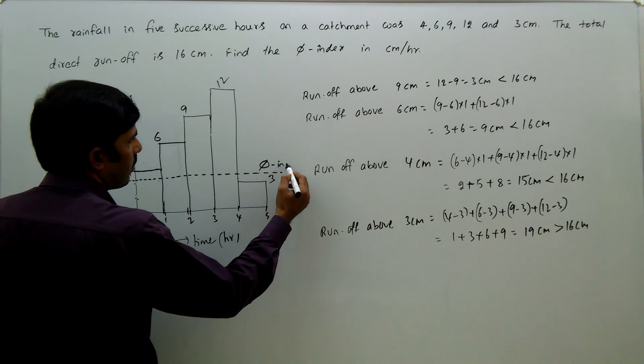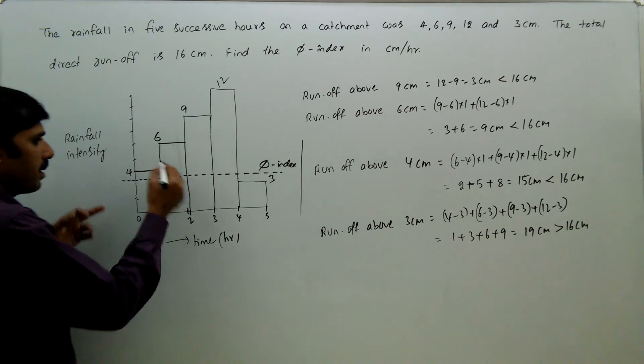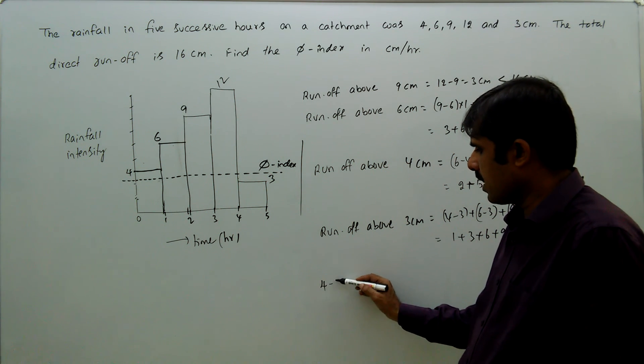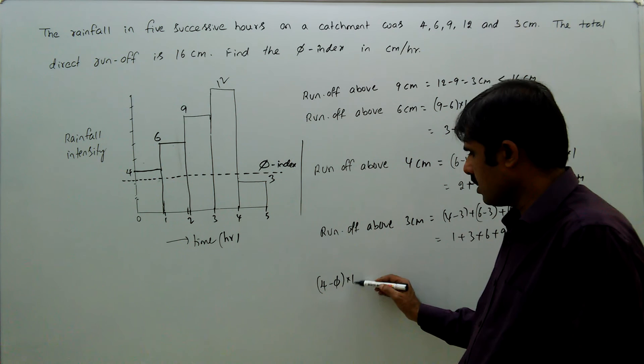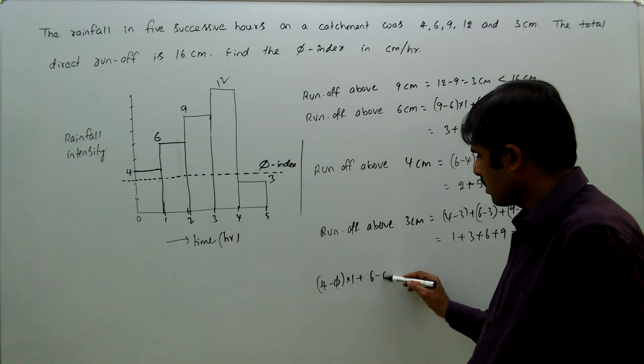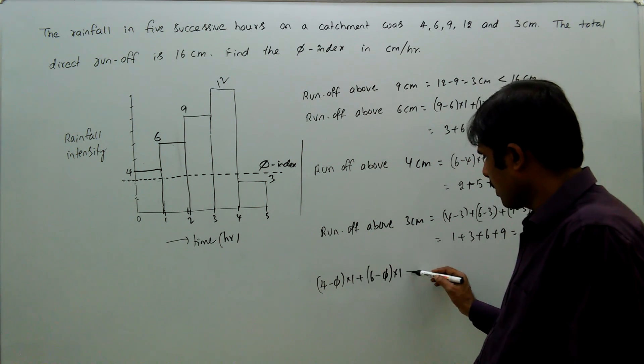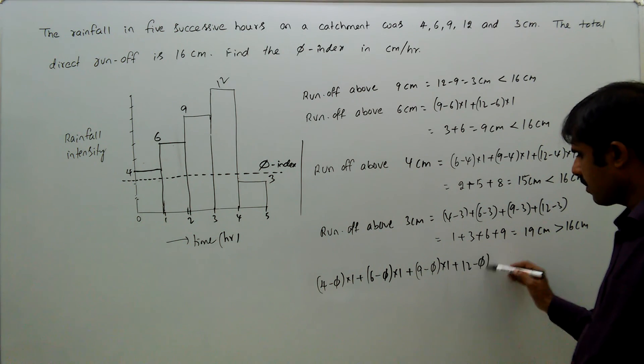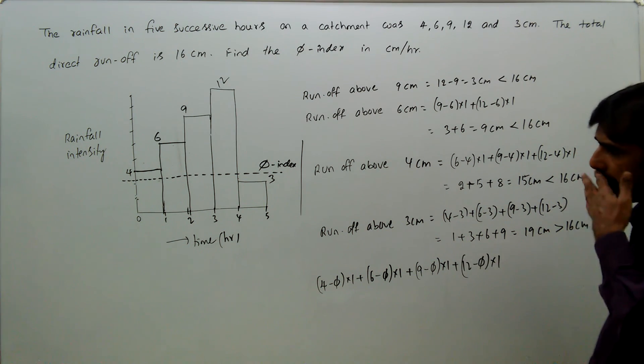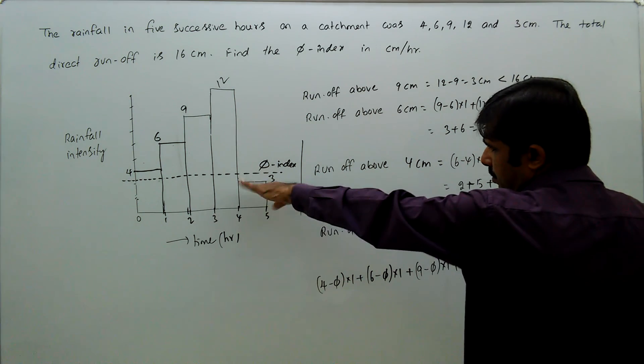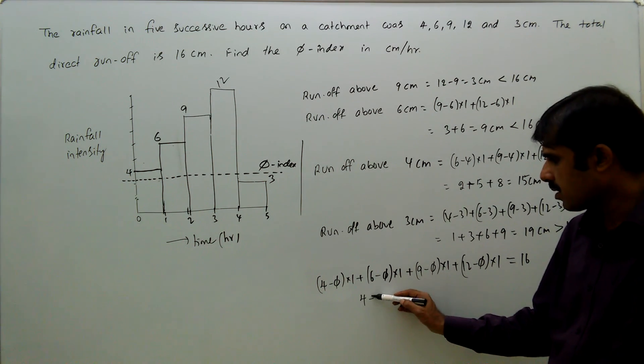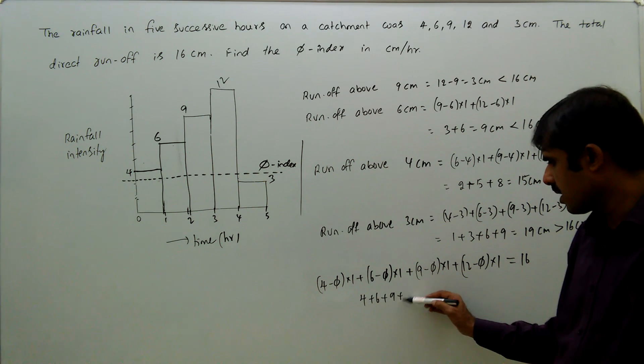φ index is in between 3 and 4. Now we will write the equation: that is 4 minus φ into 1, plus 6 minus φ into 1, plus 9 minus φ into 1. We should not write 3 minus φ, because 3 is below the φ index. That is equal to total runoff, that is 16 centimeters.